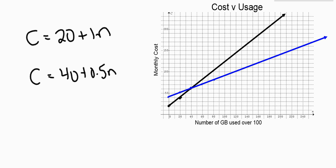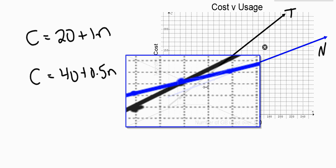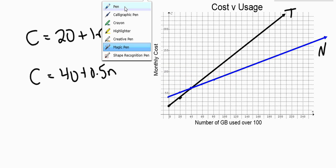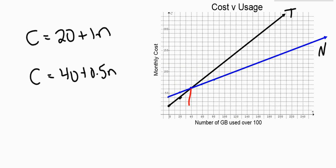Perfect. So there's my two lines. Properly label the graph, please. This is TechNet, and this is Network Solutions. And we can see right here is the intersection of those two lines. There's the intersection of those two lines. Isn't that nifty? And we can see that the intersection is right where we thought it would be, where we calculated it would be, that if you use 40 extra gigabytes, they cost the same amount. And before that point, the black line, the TechNet company, is cheaper. But after that point, the cheaper company is Network Solutions.